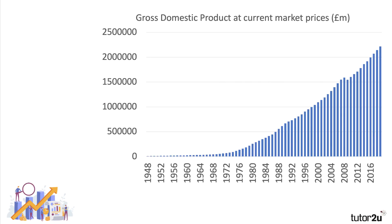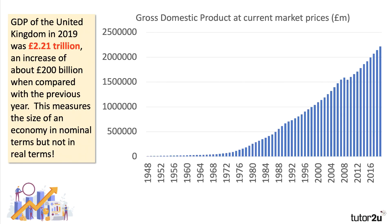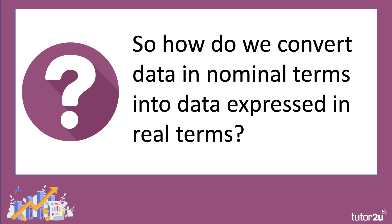So how big is the UK economy? A common measure uses current prices not adjusted for inflation. The total size of the UK economy in 2019 was 2.21 trillion pounds, a little bit above the year before. This measures the size of the value of output of goods and services in nominal terms — in monetary terms — but not in real terms.